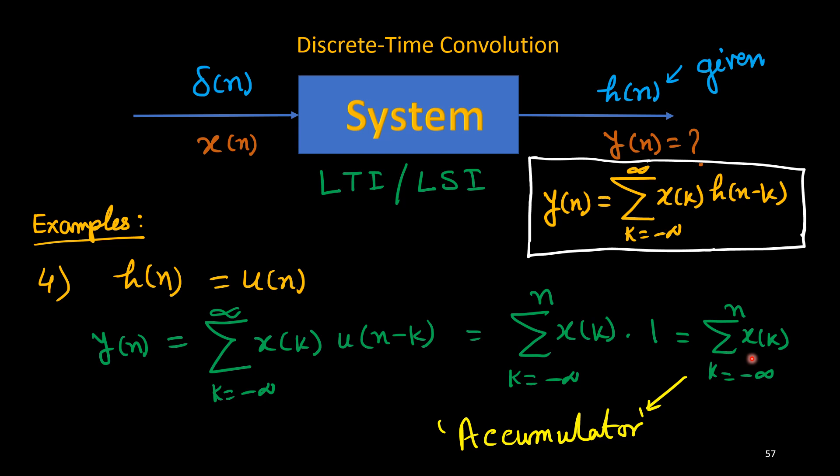In continuous time domain, similarly, if h(t) = u(t), the corresponding output y(t) is an integration — that is an integrator. In continuous domain it is an integrator; in discrete domain it is an accumulator. We will continue this discussion with more examples, graphical methods, and tabular methods to compute convolution in future videos.